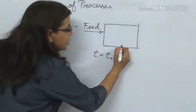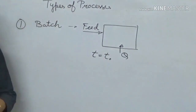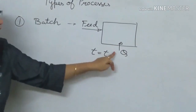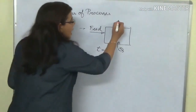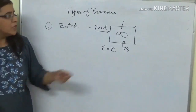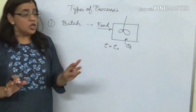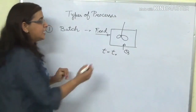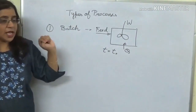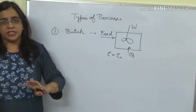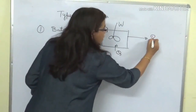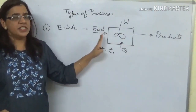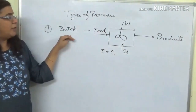In a batch process, we do allow energy to cross the boundary. You might want to heat it — for a reactor, you might supply heat to bring it up to the reaction temperature. Heat can cross the boundary, and if it is a mixing unit, you can also do work in the form of stirrer work. So material does not cross the boundary, but energy can cross in the form of heat or work. Once your mixing or reaction has completed, we open the reactor and take out the products. When the process is going on, no material or mass crosses the system boundary — that is the requirement for a batch process.